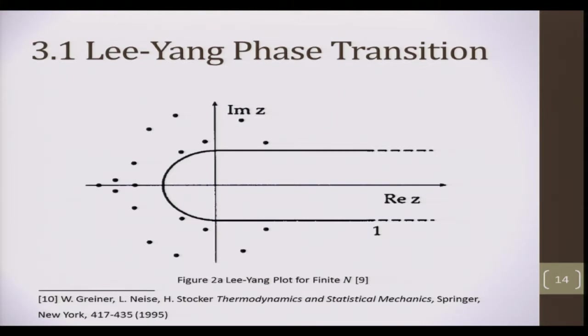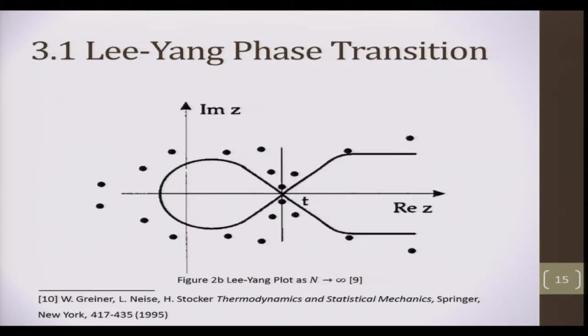In the limit where n is large, you get something like this. There's a convergence of roots towards the positive real axis, and where that occurs, there's a phase transition.